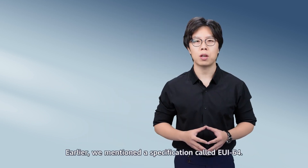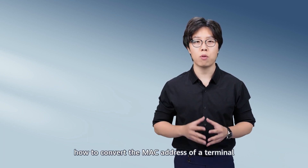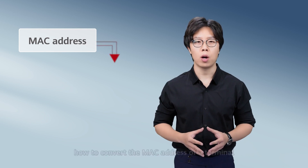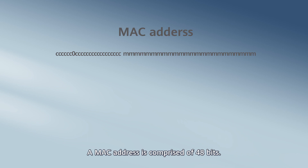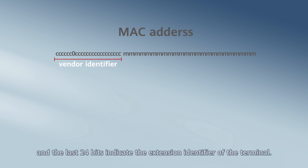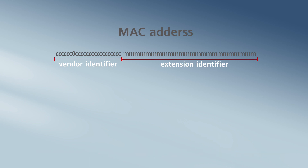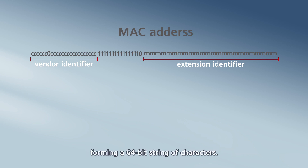Earlier, we mentioned a specification called EUI64. This specification describes how to convert the MAC address of a terminal into the interface ID of its IPv6 address. A MAC address is comprised of 48 bits — the first 24 bits indicate the vendor identifier of the terminal, and the last 24 bits indicate the extension identifier. According to the EUI64 specification, FFFE is inserted between the two groups of 24 bits, forming a 64-bit string of characters.